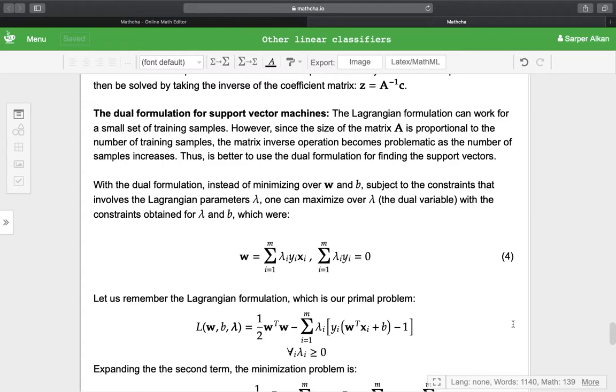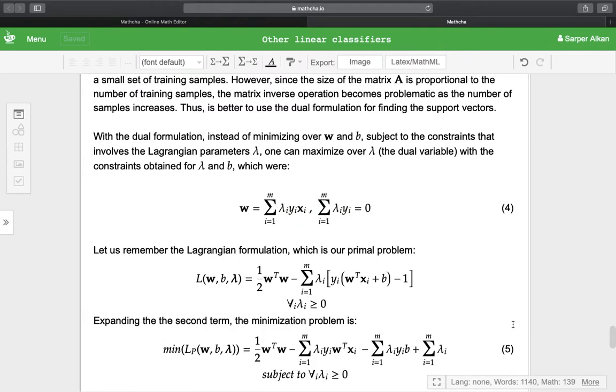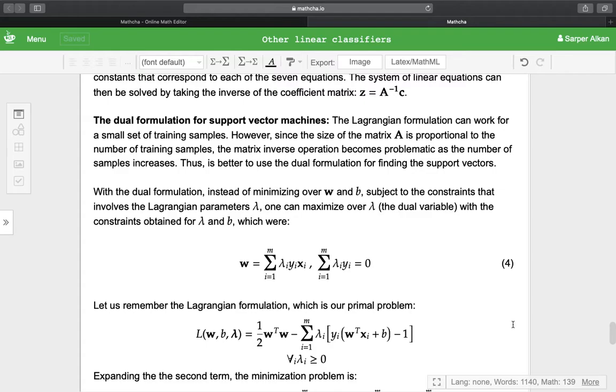With the dual formulation, instead of minimizing over W and B subject to the constraints that involve Lagrangian parameters λ, one can maximize over λ (the dual variable) with the constraints obtained for λ and B.